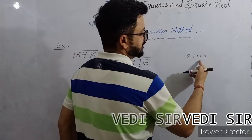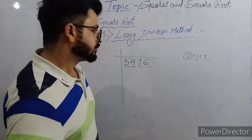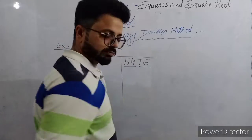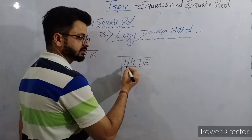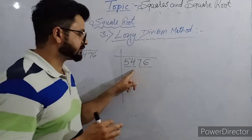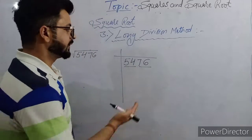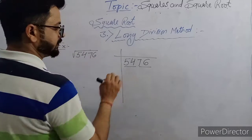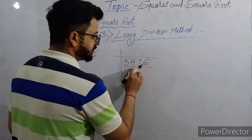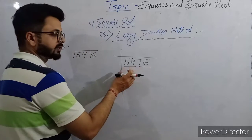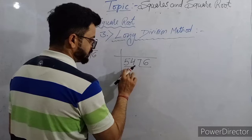We'll start from this side to make pairs. These pairs we are calling 'periods.' Now we'll come to the leftmost period. The second step: we have made periods, now we will think about this first period.